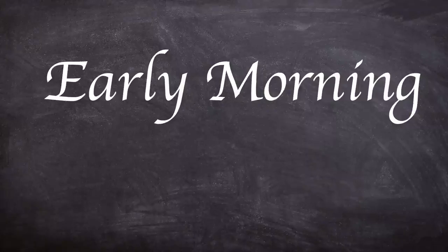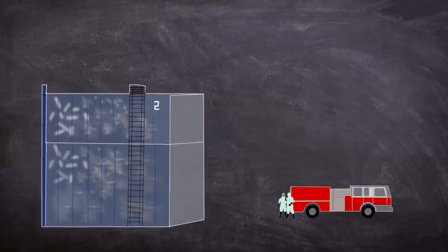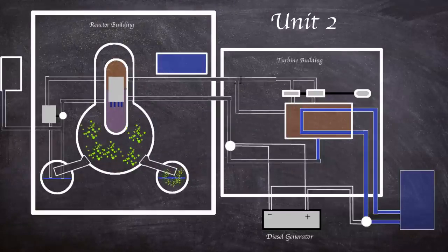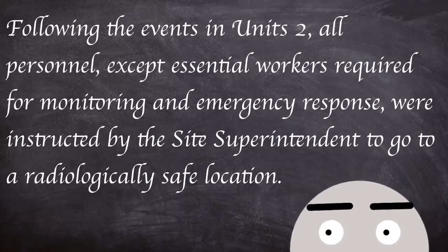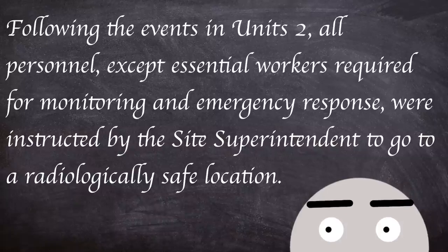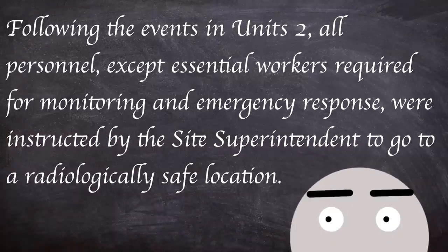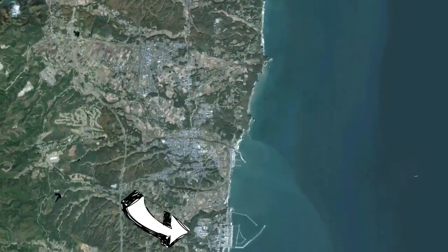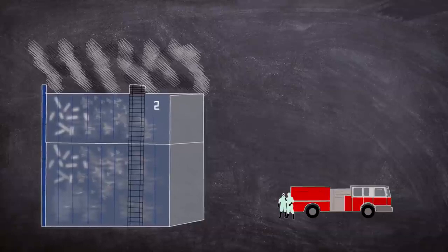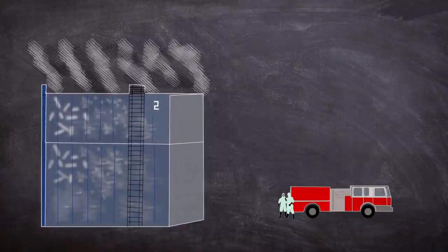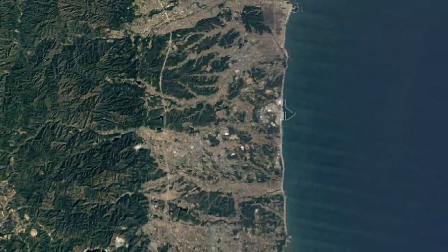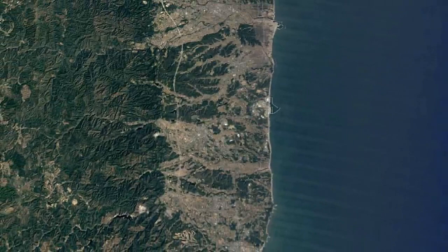In the early hours of the 15th of March, explosions were heard at units 2 and 4, with the top half of unit 4's building being damaged. A drop in pressure readings on the suppression chamber of unit 2 was seen. This hinted that the containment of the reactor had been compromised, meaning an uncontrolled release of radioactive isotopes. Following the events in unit 2, all personnel except essential workers required for monitoring and emergency response were instructed by the site superintendent to go to a radiologically safe location. 650 people evacuated to Fukushima Daini nuclear power plant site approximately 12km away. White smoke or steam was seen to be coming from the top of unit 2's reactor building. A radiation measurement was taken of 11.93 millisieverts an hour at the main gate at 9am. An order was issued by the government authorities at 11am requiring all residents within a 30km radius of the power plant to take shelter indoors.